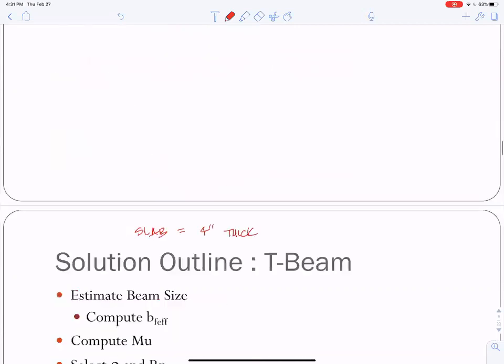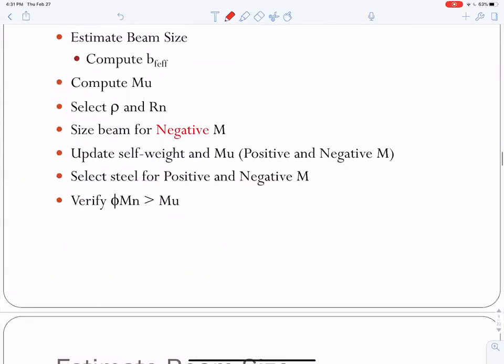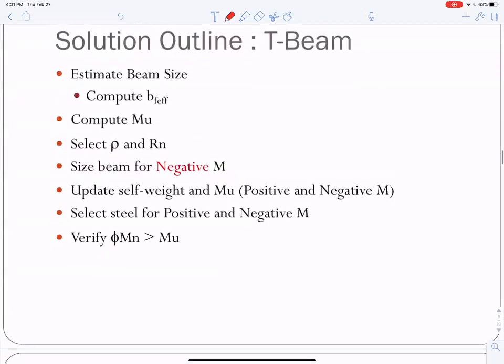This is important. When we size the beam, we're going to size the beam for the negative moment. We're going to size the beam for the negative moment for a couple of reasons. First of all, the negative moment is the largest moment, but more importantly a T-beam is more effective against positive moment than against negative moment. So we want to size the beam for its least effective state, which is negative moment.